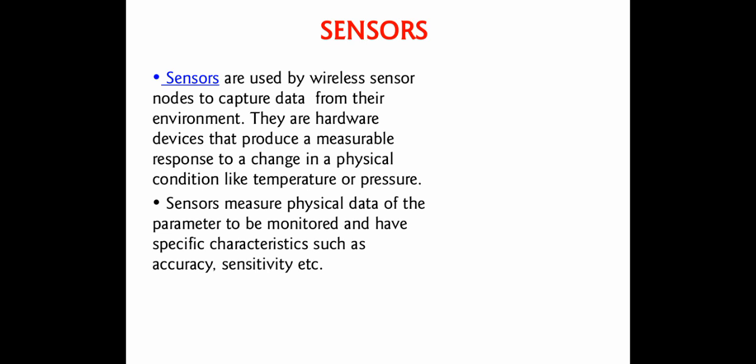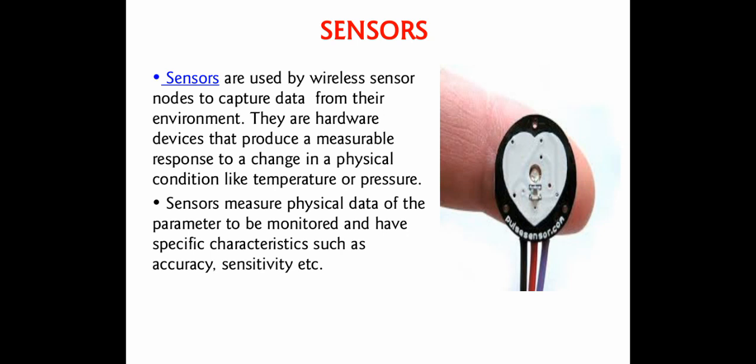Now, coming to the sensors. Sensors are physical devices that capture or measure physical and environmental conditions and convert them into electrical signals. These sensors have characteristics like accuracy and sensitivity that depend upon the cost of the sensor. Some sensors manipulate the data while others give the data without manipulation. Types include temperature sensors, humidity sensors, cameras, seismic sensors, and radar sensors — every sensor has a specific use.